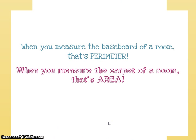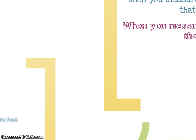How are we going to remember the difference between these two things? Let's think of a room — like a room in your house or the classroom you're sitting in. If you're measuring the baseboard of the room, the edging that goes around the bottom of the floor, that's the perimeter. But when you measure the carpet of a room — how much flooring you would need — that is the area.